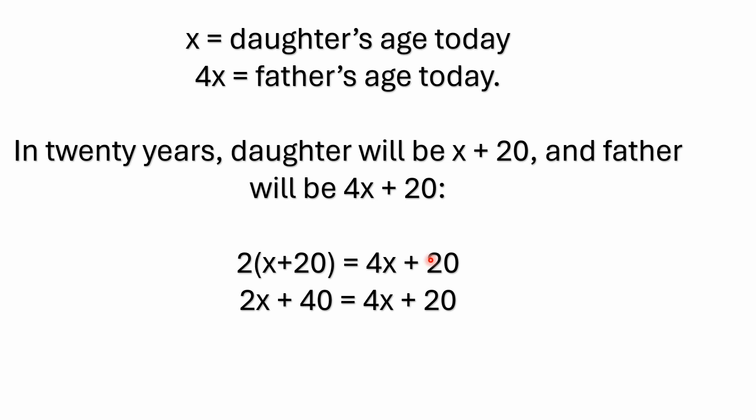X just represents a variable. If the daughter was one year old, the father would be four years old. Of course, that doesn't make any biological sense whatsoever. But if X was 50, the father would be 200. Again, that seems a little unrealistic as far as life expectancy. But basically, that's all it is.